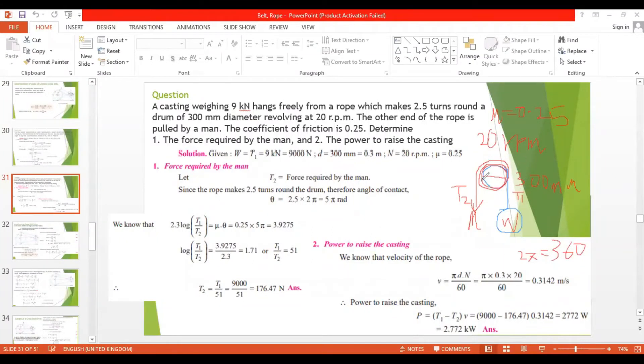This is making two and a half turns, so one turn is 360, another turn is 360, another half turn is 180. So 2.5 into 360 which will give you five pi radians, that is equal to 900 degrees. Now we will put it in the equation.